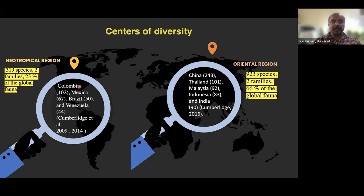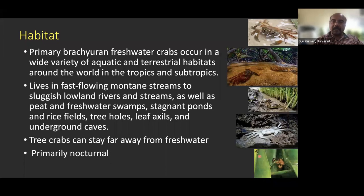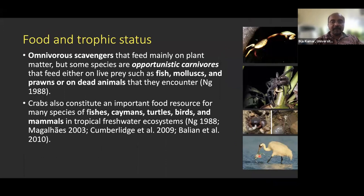Freshwater crabs inhabit many different habitats in both the tropics and subtropics. They primarily live in mountain streams, but may also be found in swamps, rice fields, stagnant ponds, tree holes, leaf axils, and even underground caves. Most are primarily nocturnal. There is one crab in the Western Ghats that lives inside phytotelmata, which will be discussed later.